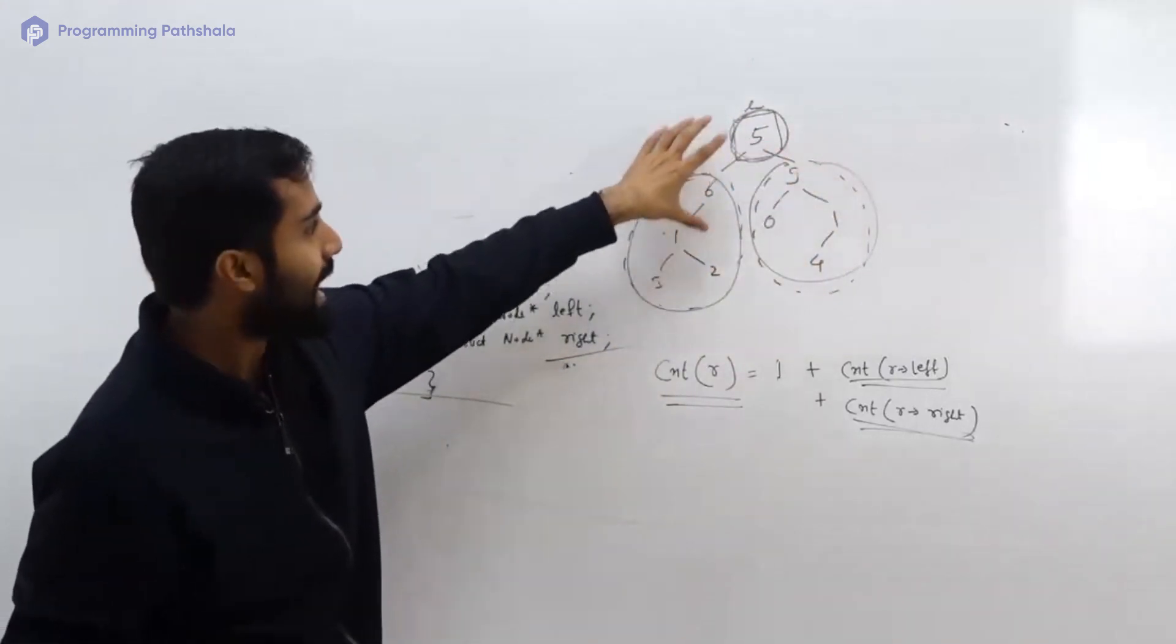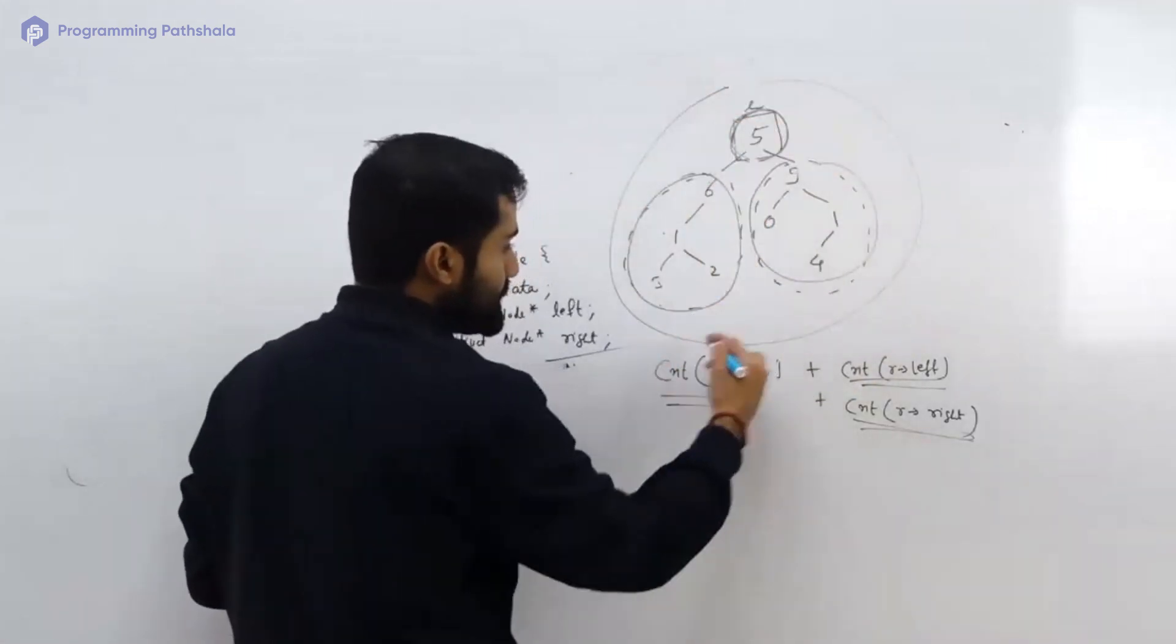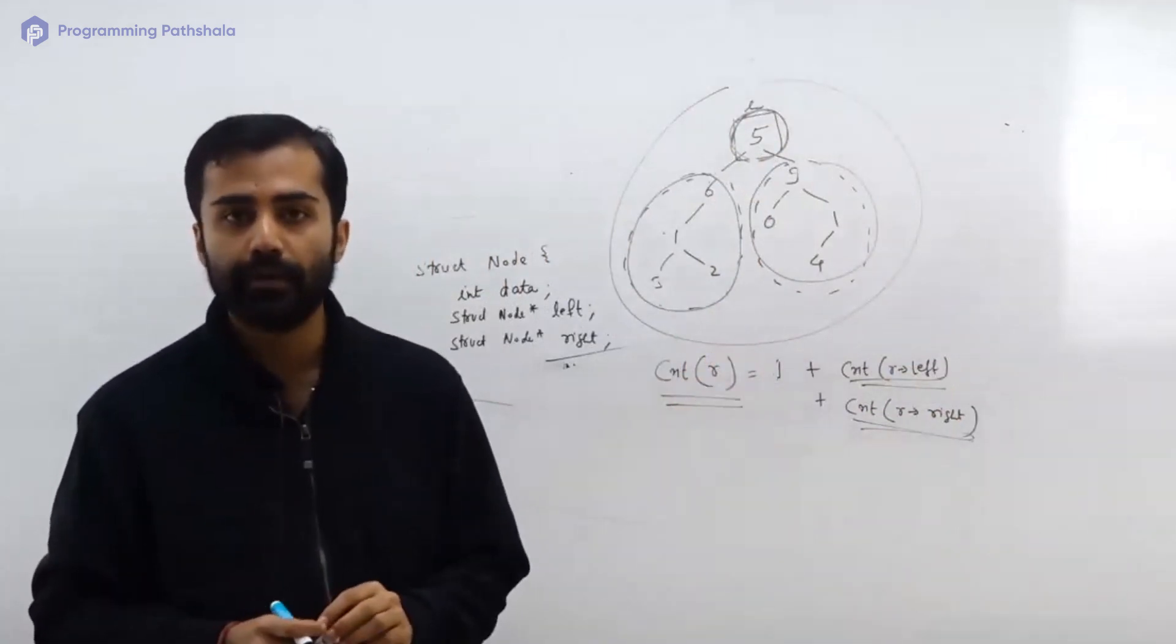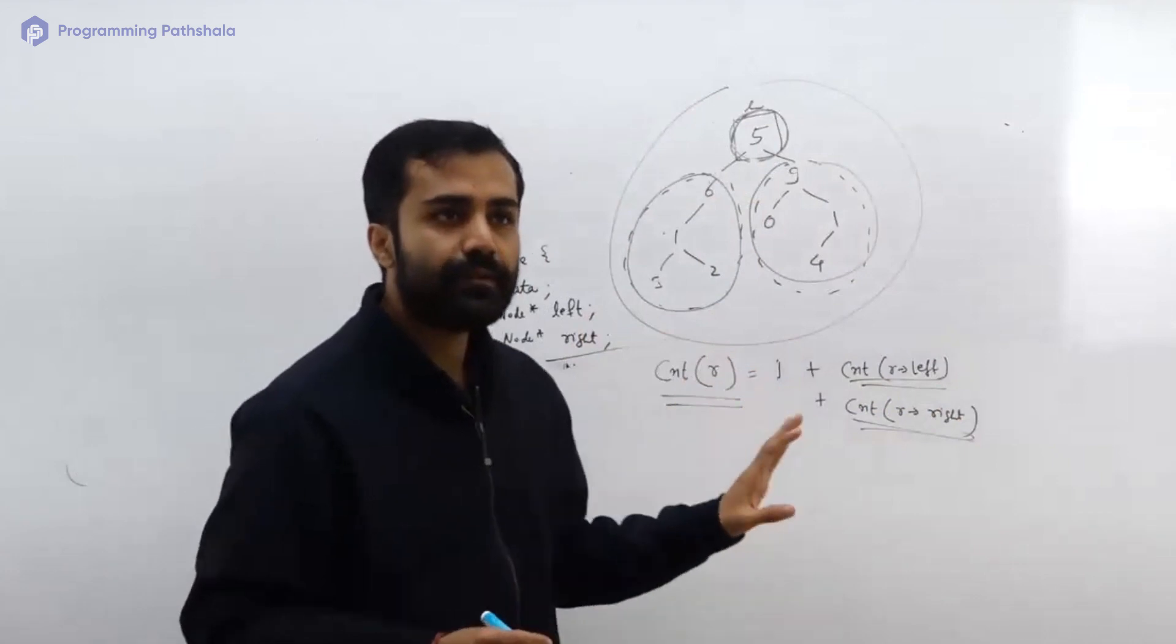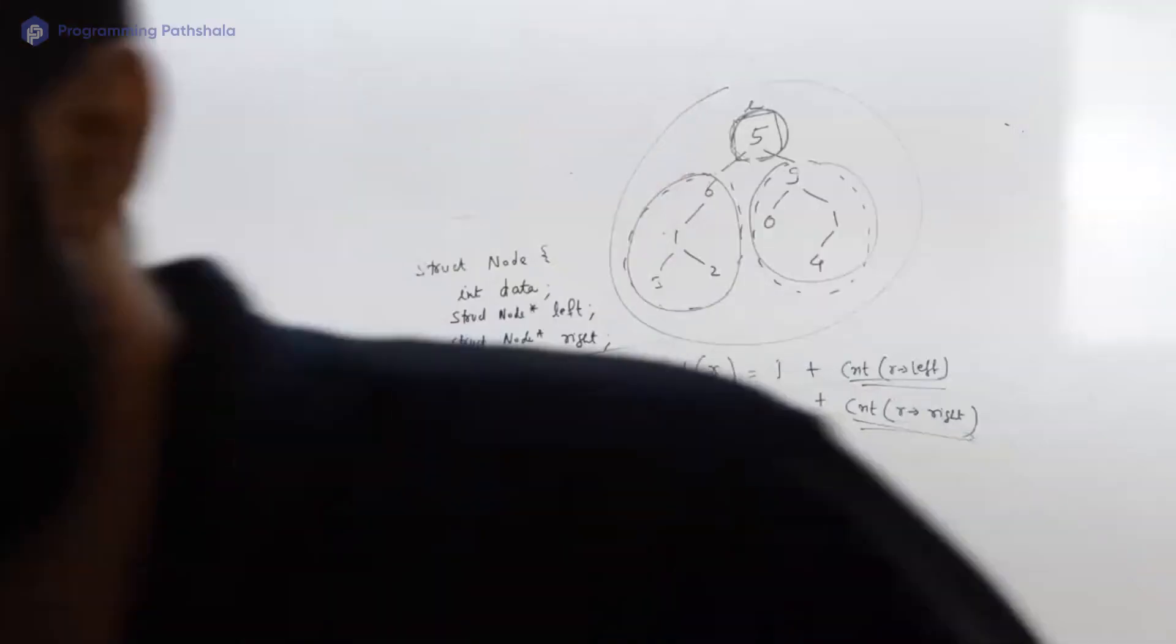And what is this? This is purely a recursive equation which you can code and get your job done. Is it making sense to everyone, like what this equation is and why this is fundamentally correct before we code it?